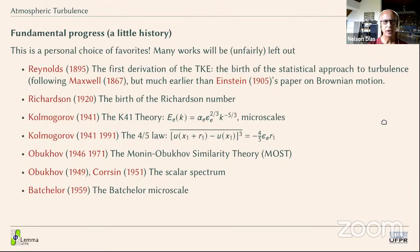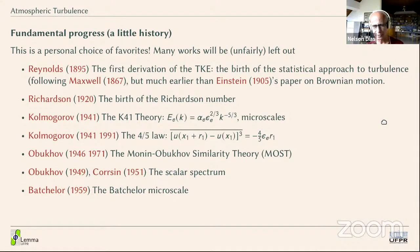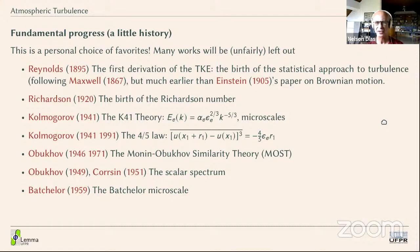Let's take a brief look at some very fundamental things involved in turbulence. I like to start with Reynolds in 1895, because he was an engineer — as I am, as Lívia, the next presenter, also is. Reynolds was the first to apply some of James Clerk Maxwell's ideas to a continuum. Maxwell had written his paper on the kinetic theory of gases and statistical mechanics — probably the foundation of statistical mechanics — in 1867. Reynolds was the first to derive the turbulence kinetic energy equation, and he did that ten years before Einstein's paper on Brownian motion. That's a landmark.